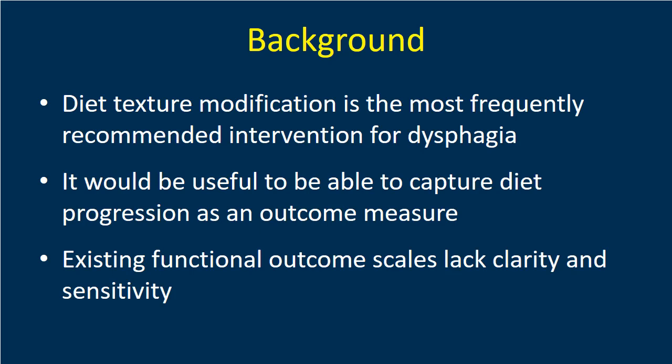As background, we all recognize that diet texture modification has become the most frequently recommended intervention for dysphagia. It's widely used and is a component of the treatment plan for dysphagia in most cases. It has been suggested that tracking a person's progression from one diet texture to another could serve as an outcome measure reflecting their improvement or failure to improve with respect to their swallowing function. As we developed the IDDSI framework, we recognized that existing functional diet outcome scales didn't fit with the framework, and we felt that they lacked clarity and sensitivity to change.